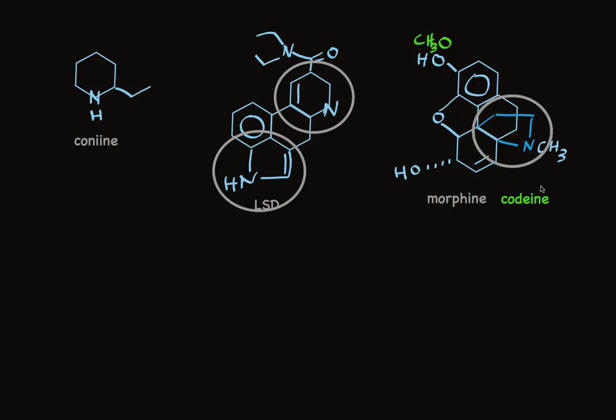Morphine and codeine also have two heterocyclic rings. One is a nitrogen ring and the other is an oxygen ring. There's the nitrogen heterocycle, it's a six-membered ring, and here's the oxygen heterocycle. These guys are important tools in pain management.